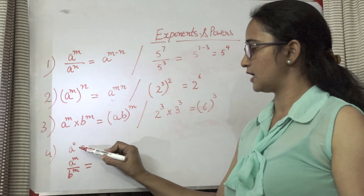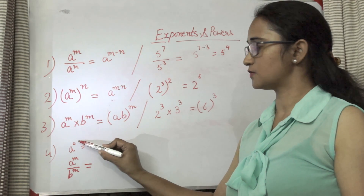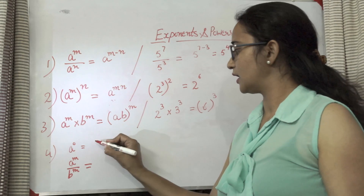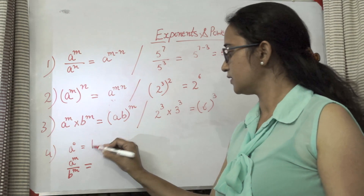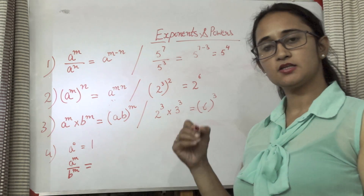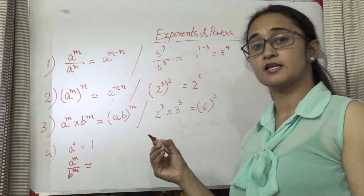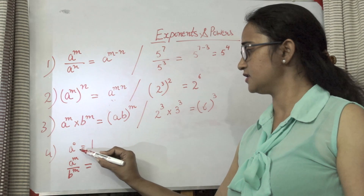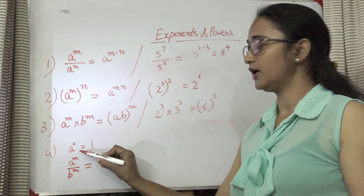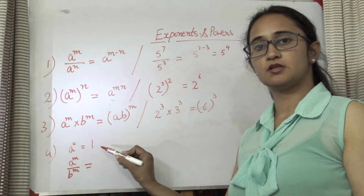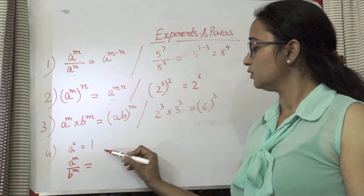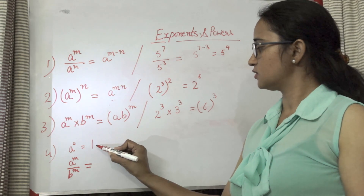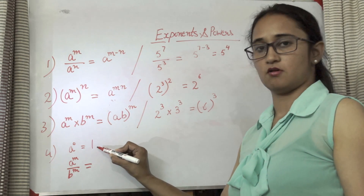The 4th law says a raised to the power 0 — its value is always equal to 1. In my next video, I will explain the logic behind why a raised to the power 0 is 1. So this is your 4th law.